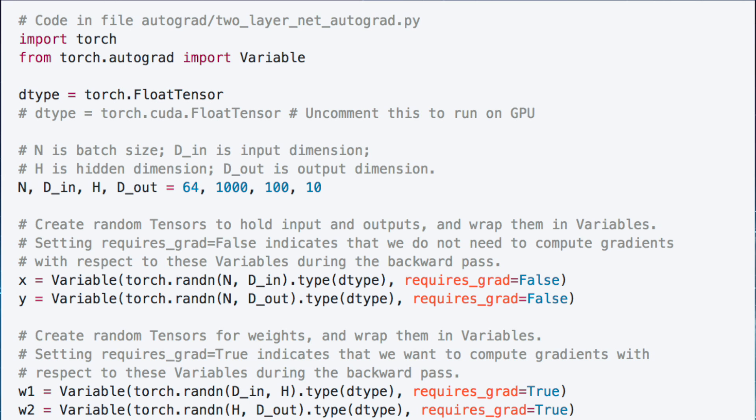We'll then use those values to help define tensors to hold inputs and outputs, wrapping them in variables. We'll set requires_grad to false since we don't need to compute gradients with respect to these variables during backpropagation.